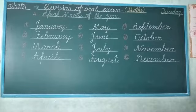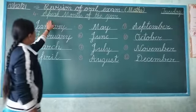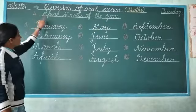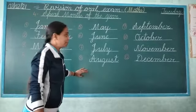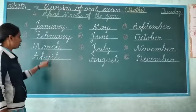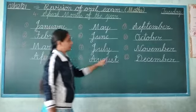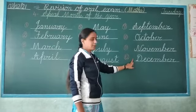Now let's repeat again. Revision of oral exam, subject maths, topic number 4 — speak months of the year. How many months are there in the year? There are 12 months: January, February, March, April, May, June, July, August, September, October, November, and December.